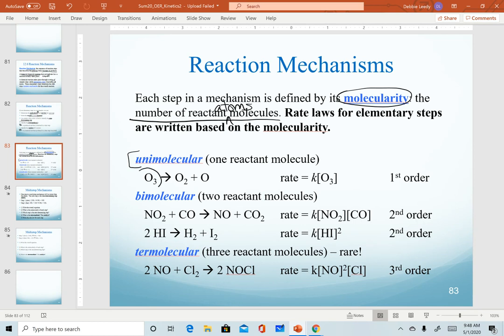An example of a unimolecular would be one ozone molecule decomposing. Bimolecular is describing two reactant atoms or molecules. Notice here we have NO2 plus CO. That's two molecules. Also recognize that a coefficient counts toward the number of reactant molecules. Saying that we have 2 HI is the same as saying HI plus HI on the reactant side. That is still considered bimolecular.